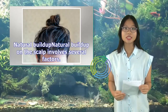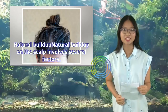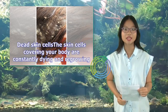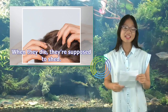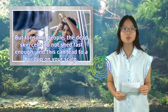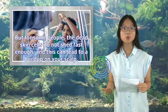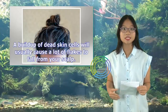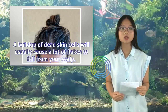Natural buildup on the scalp involves several factors. Dead skin cells: the skin cells covering your body are constantly dying and regrowing. When they die, they're supposed to shed and new ones should grow to replace the old ones. But for some people, the dead skin cells do not shed fast enough, and this can lead to a buildup on your scalp, causing a lot of flakes to fall.